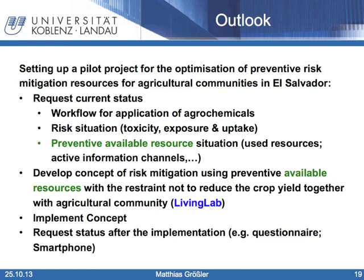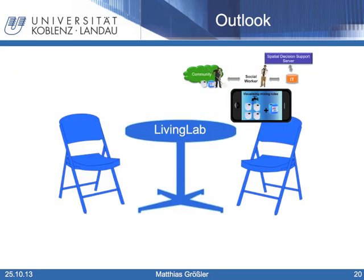The single phases of this pilot project could be as follows. The first step would be to request the current status in the agricultural community, including the workflow for application of agrochemicals, the risk situation, and the preventive available resources situation. Then, a concept of risk mitigation using preventive available resources would have to be developed together with the agricultural community, with the restraint not to reduce the crop yield. This could happen in the framework of a living lab, as shown in the presentation of Marlene Hasselman. Afterwards, the concept would be implemented, and finally the status after implementation would be requested via a questionnaire or mobile device. This suggested living lab is only one part in a larger living lab necessary to reach our goals.